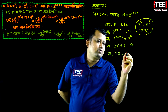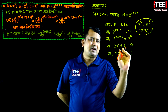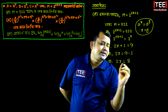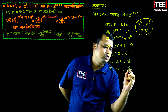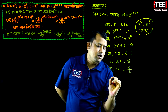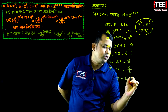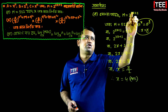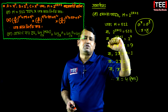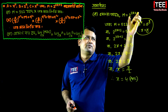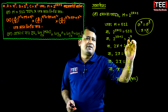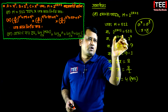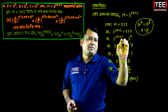2x equal to 9 minus 1. 2x equal to 9 minus 8. 2x equal to 8. x equal to m equal to 2x plus 1. m equal to 512. 512, 2x equal to 512. 2x plus 1 equal to 9 calculation.